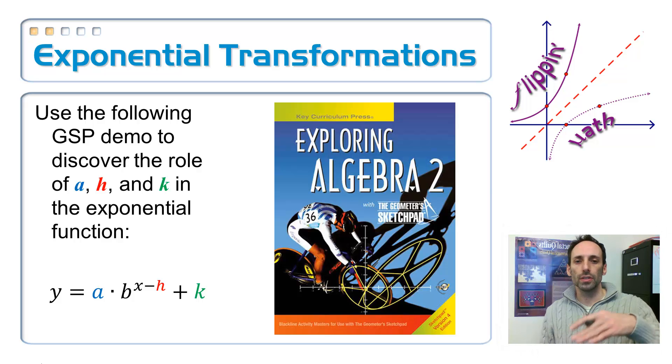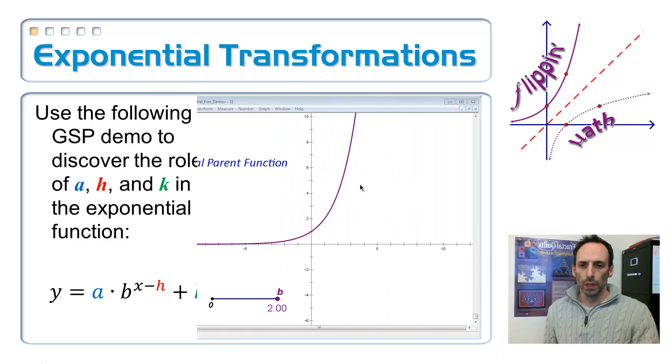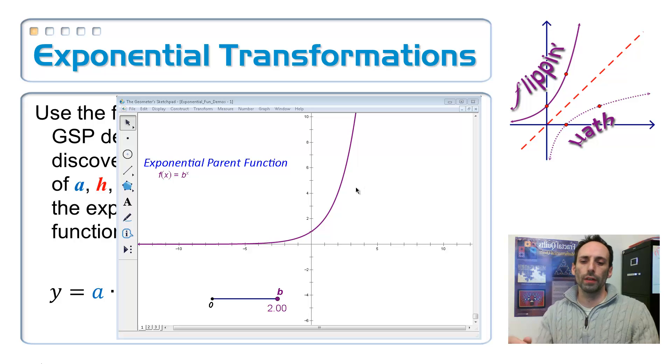So let's look on Sketchpad. Let's see what all of the A, the B, the H, and the K do whenever I go to graph these things. What are all the transformations for those graphs? Okay, so on this demo, what I have right now is just a regular old exponential function. And let's just see what happens whenever I change the B value, the base.